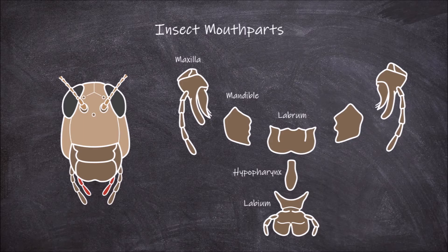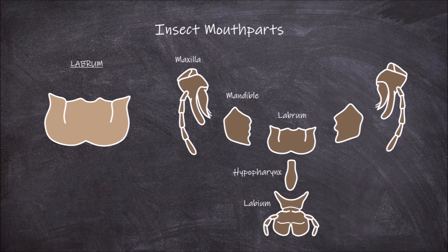As there are different modifications to these mouth parts depending on feeding strategy, we will look at an example of mouth parts used for chewing. The first mouth part is the labrum, also known as the upper lip of the insect mouth parts. It is simple and usually bilobed in structure, and it forms the roof of the mouth and the preoral cavity, covering the mouth cavity from above.